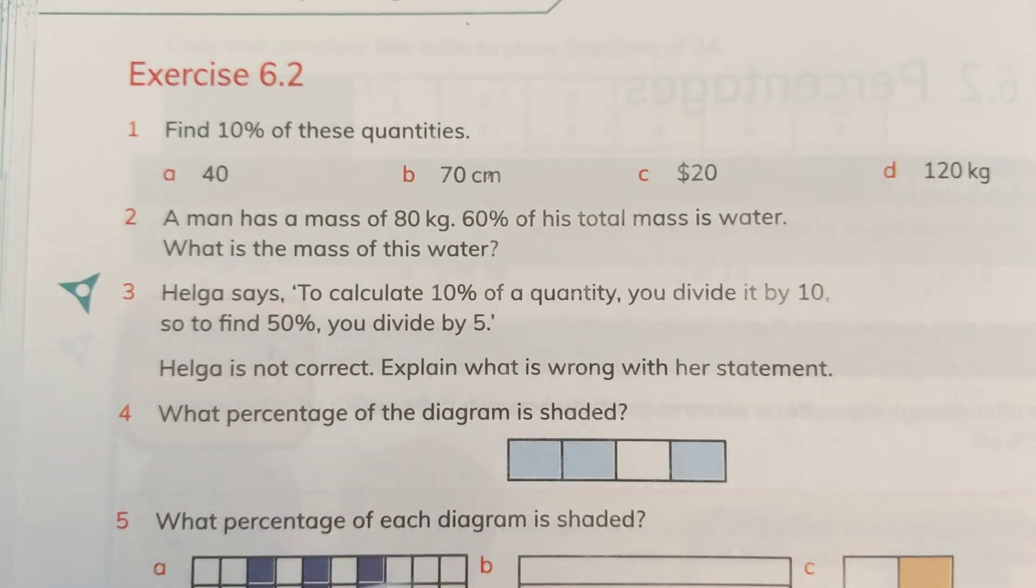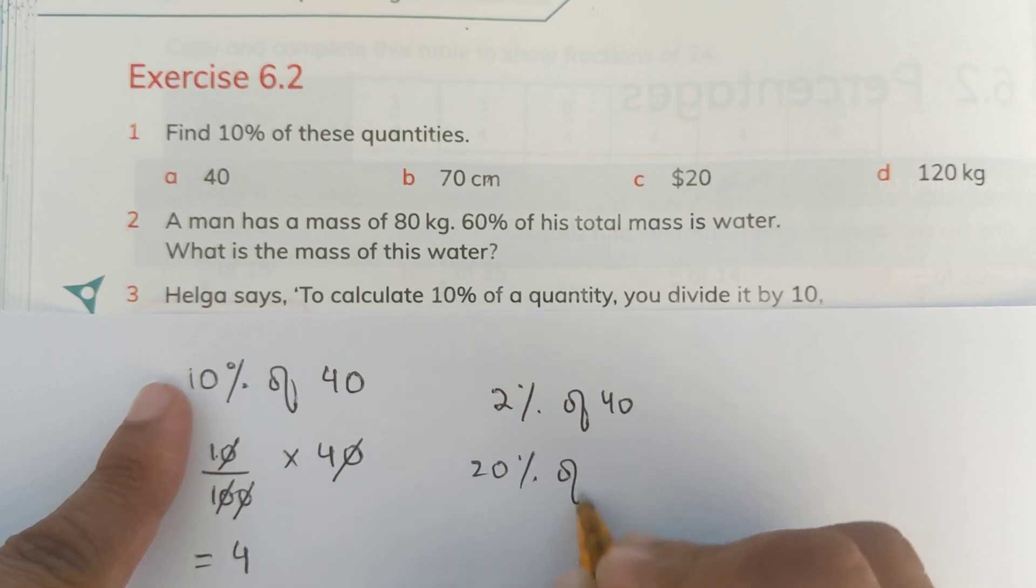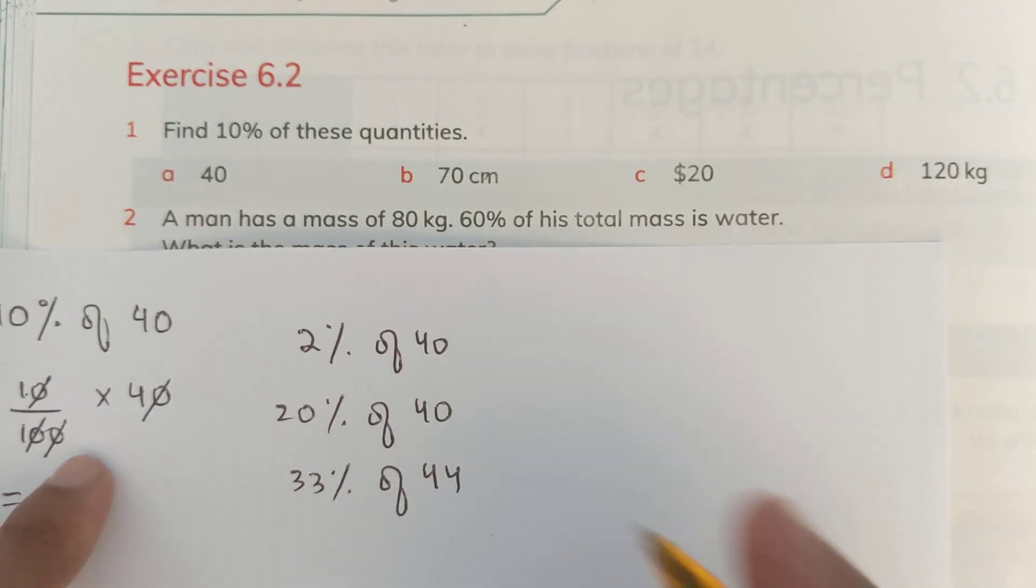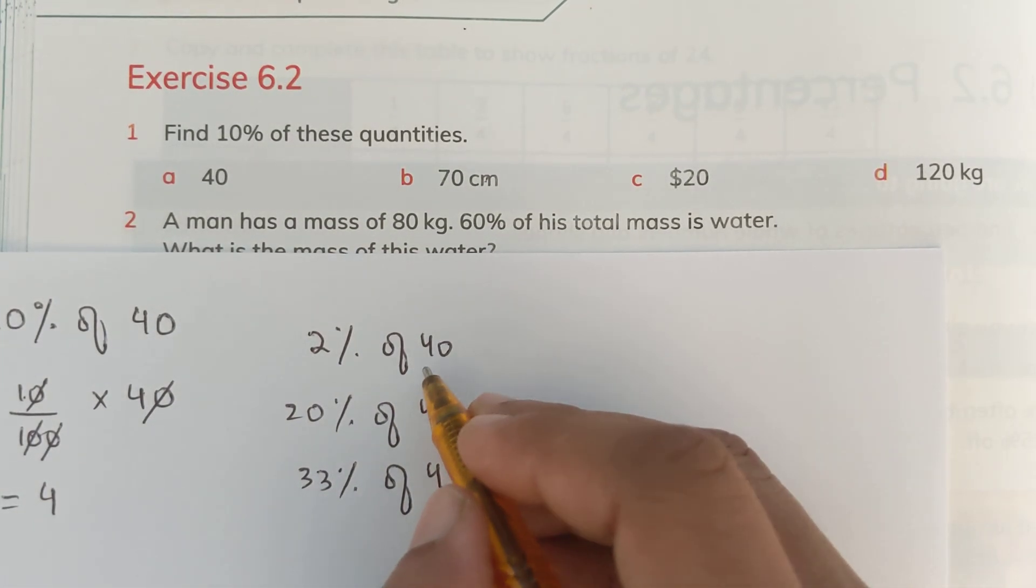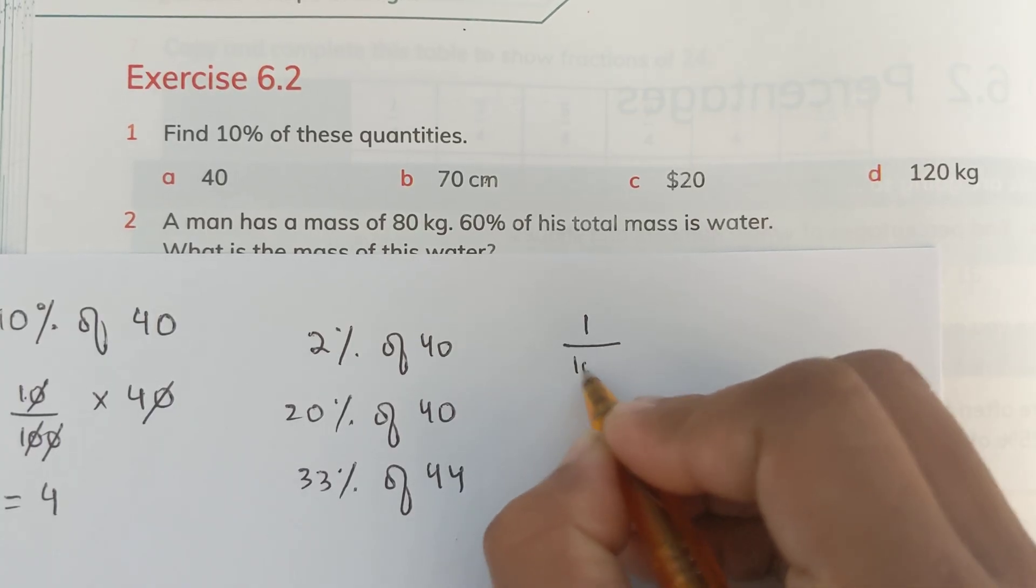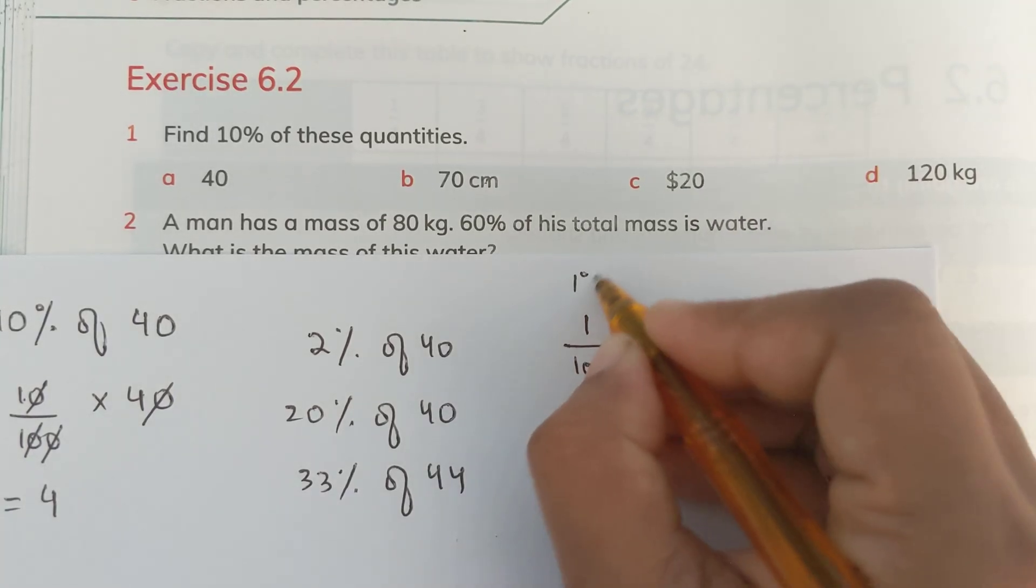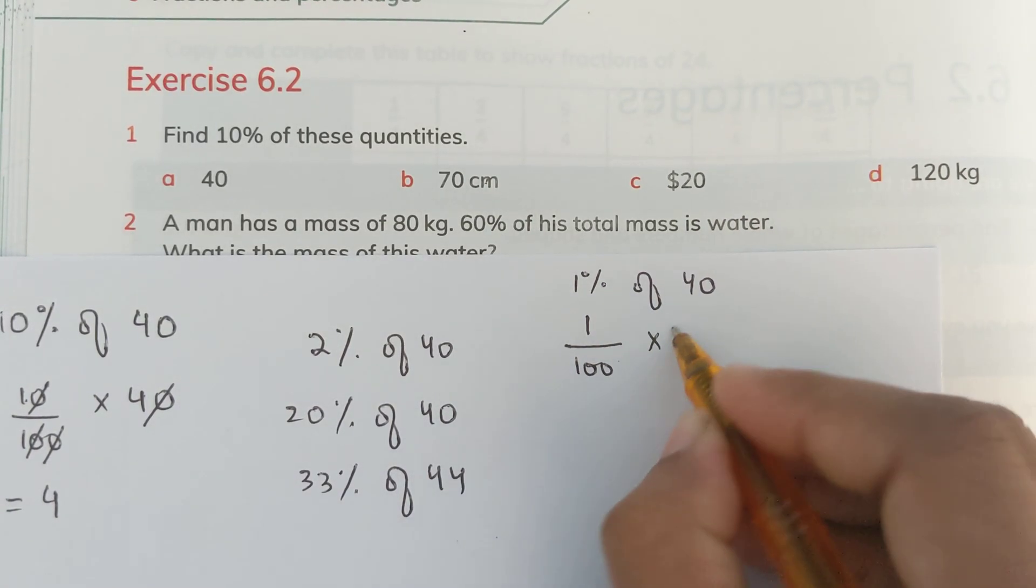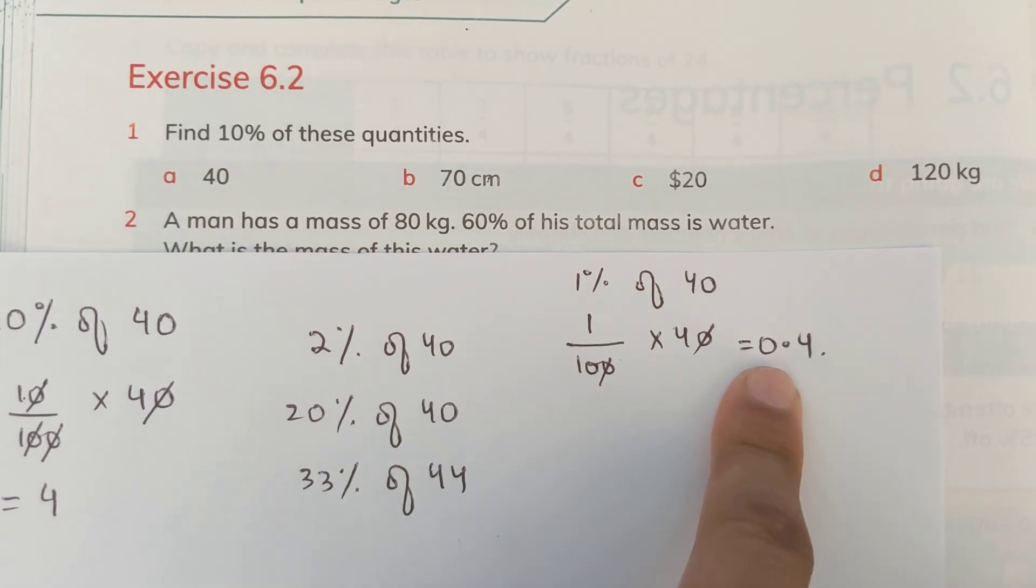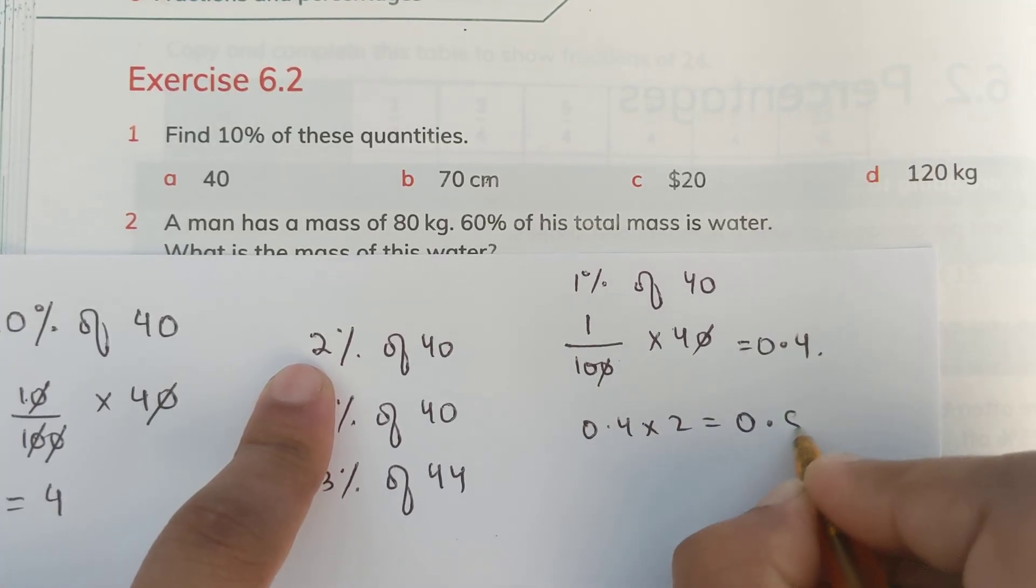Or you can do it like this as well. Students, whenever you have to calculate like if you have to calculate 2% of 40, or 20% of 40, or 33% of 40, whatever percentage you have to calculate for any number, what you can do is, since we know that 100% of a number is 40, 100% means a complete number, a full number is 40. So, what would be its 2%? We will simply find out 1 upon 100. That is 1% of 40. We will first find 1% of 40 would be 1 upon 100 multiplied by 40. 0 cut 0. 4 divided by 10 is equals to 0.4. It means if a number is 40, its 1% would be 0.4. So, what would be its 2%? It would be 0.4 multiplied by 2. That is 0.8.